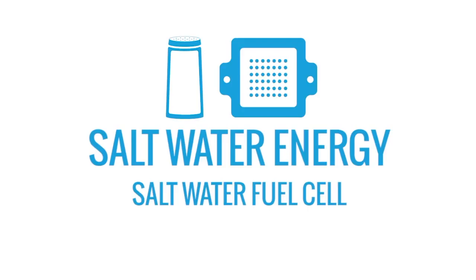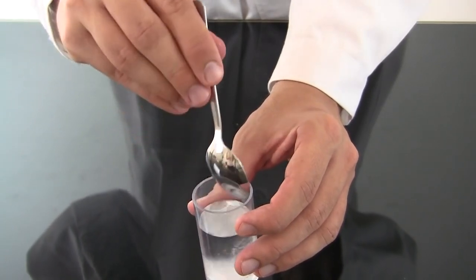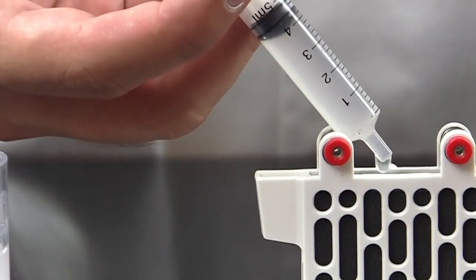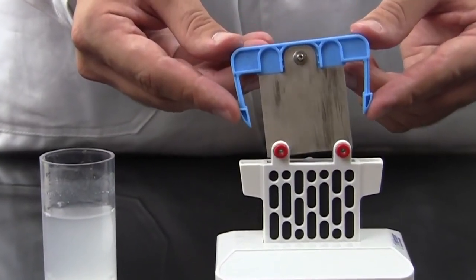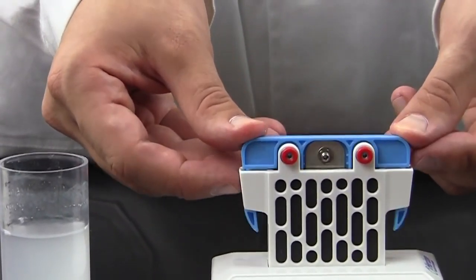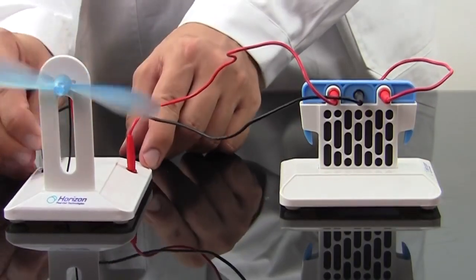The saltwater fuel cell creates electrical energy with a small amount of salt water. Measure out your desired concentration and inject the water into the cell using the syringe. The magnesium anode easily snaps into place. Then connect the wires to the fan motor and you'll start generating electricity right away.